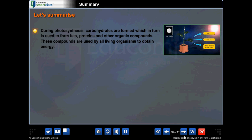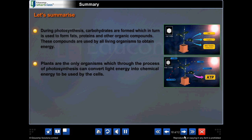Let's summarize. During photosynthesis, carbohydrates are formed, which in turn is used to form fats, proteins and other organic compounds. These compounds are used by all living organisms to obtain energy. Plants are the only organisms which, through the process of photosynthesis, can convert light energy into chemical energy to be used by the cells.